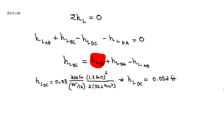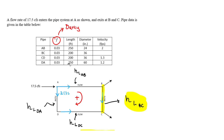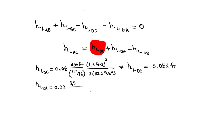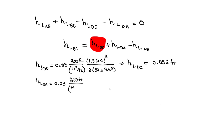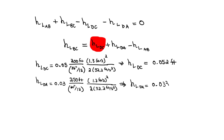For the head loss in DA: same procedure, same friction factor of 0.03, length is 250 feet, diameter is 60 inches (60/12 = 5 feet), velocity is 1.2 ft/s, divided by 2 × 32.2. The head loss in DA equals approximately 0.0335 feet.